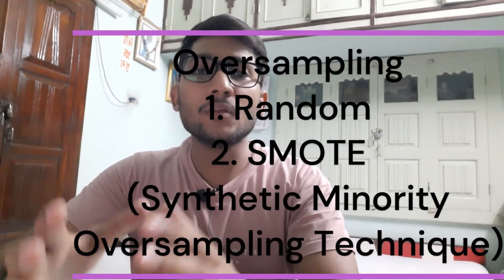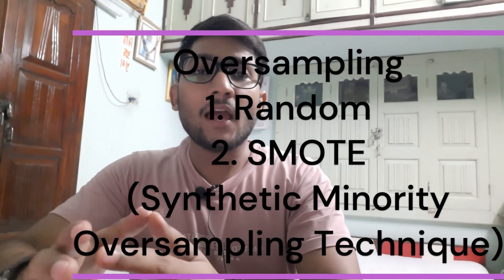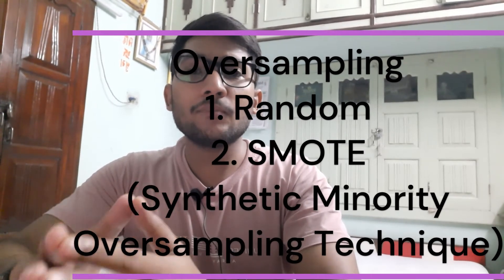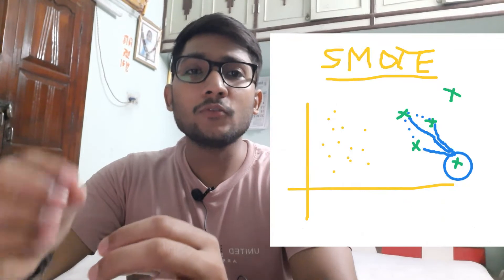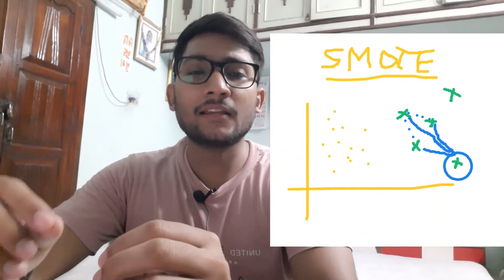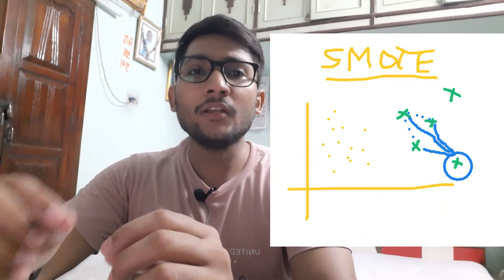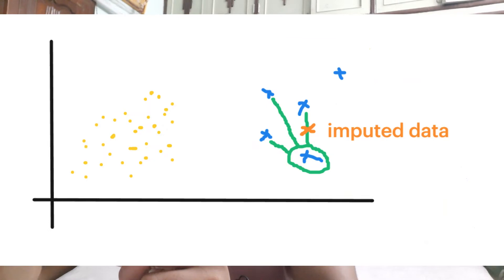Another technique is SMOTE — Synthetic Minority Oversampling Technique. The way SMOTE works is: first, you randomly pick up a minority class data point and compute its k nearest neighbors within the minority class. Then, of these k nearest neighbors, we randomly assign a new data point along the line connecting two points in that k nearest neighbor space. So it is not simply duplicating a data point of the minority class — rather, it is imputing a new data point for our minority class.